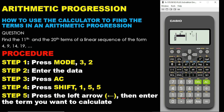Now we come to this interface. The X column is referring to the terms, and then the Y coordinate refers to the corresponding values for each term. For example, if the first term is 4, you put 1 under X — that's the first term — and the value for the first term is 4, so you put 4 under Y. If the second term is 20, you put number 2 under X, and then the value is 20, so you put it under Y.